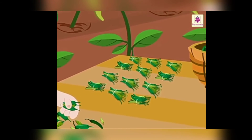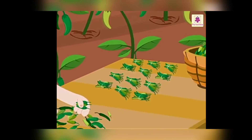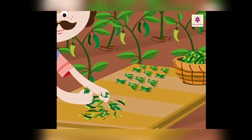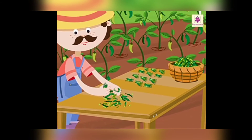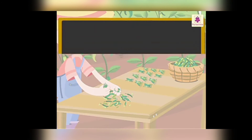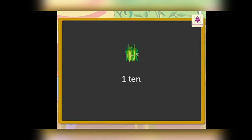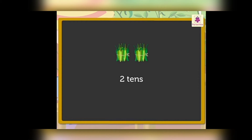Let's count by tens and learn some numbers and number names with the help of these groups. One ten chillies means ten chillies. Look, now there are two groups of tens. Two tens chillies mean twenty chillies.